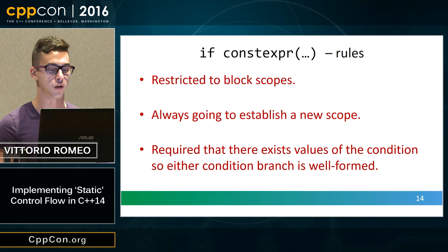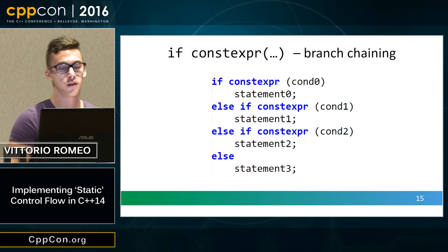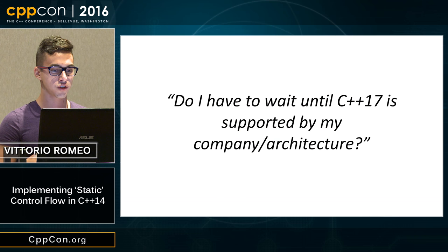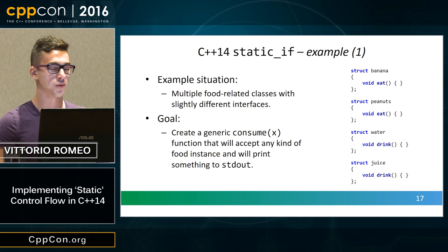So we cannot do things like D, and that's a good thing. You can chain if constexpr statements together, which is very nice. And the question you're all asking is: do we have to wait until C++17 to do something like this? If you're here, you're obviously interested in a C++14 solution, which we can implement with a slightly less enticing syntax.